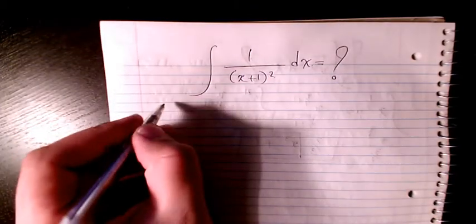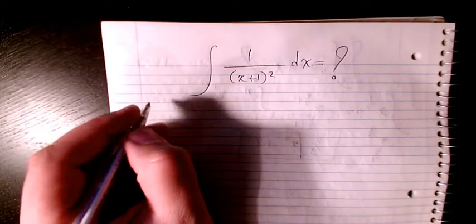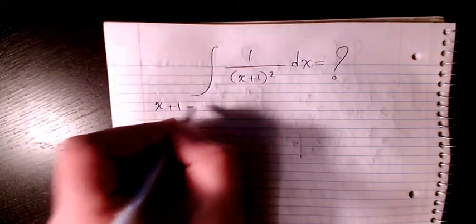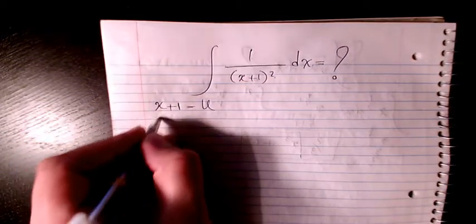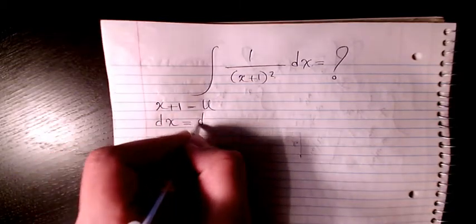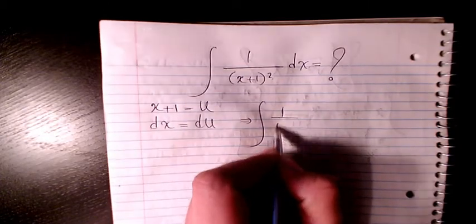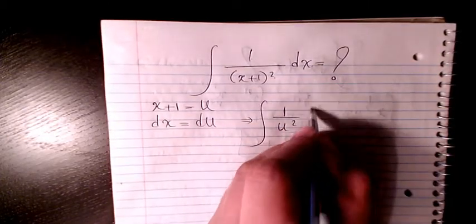So let's go back. In here we have 1 over (x+1) squared. I will need to have variable change or substitution, so instead of x+1 I will have u, so dx will be du. So it will be 1 over u squared and dx will be du.